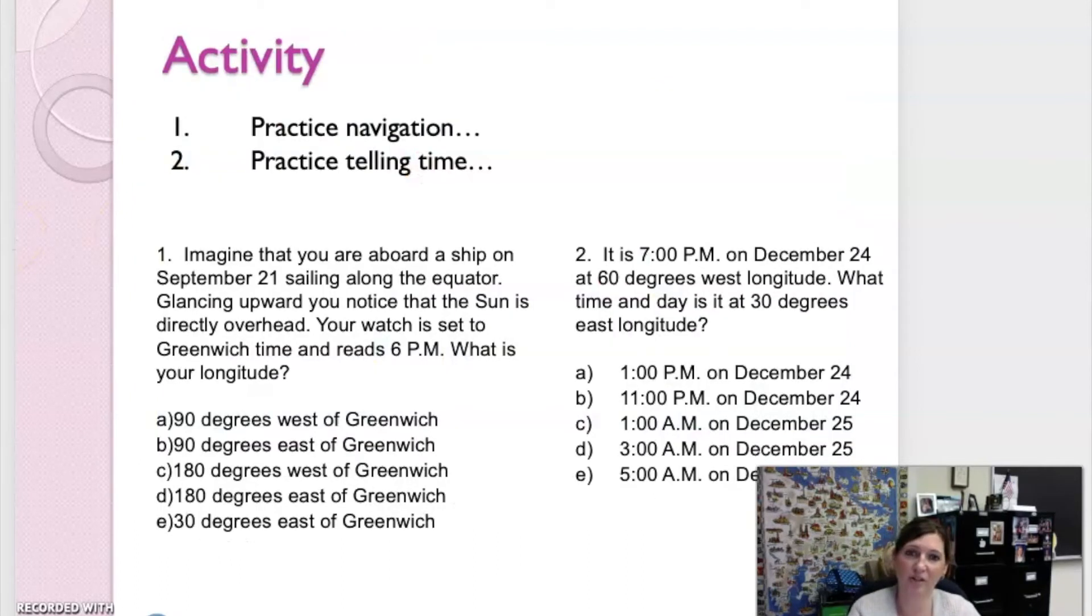So let me ask you some questions. Let's practice navigation and let's practice telling time. Number one, imagine that you are aboard a ship on September 21st, sailing along the equator. Glancing upward, you notice that the sun is directly overhead. Your watch is set to Greenwich time and reads 6 p.m. Then what is your longitude? I would pause the video now and see if you can figure this out. The answer is A, 90 degrees west of Greenwich. If it is noon on the boat and your watch is set to 6 p.m., you realize that you are six hours different in this case, and each hour is 15 degrees.